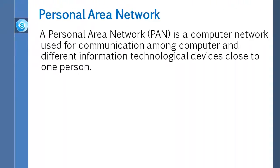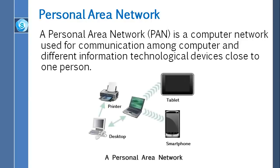Now let's talk about personal area networks. A personal area network, or PAN, is a computer network used for communication among computers and different information appliances close to one person. Some examples of devices used in a PAN are personal computers, printers, cell phones, tablets, PDAs, scanners, and even video game consoles. A PAN may include wired and wireless devices. The reach of a PAN typically extends to 10 meters. A wired PAN is usually constructed with USB and FireWire connections, while technologies such as Bluetooth and infrared communication typically form a wireless personal area network.